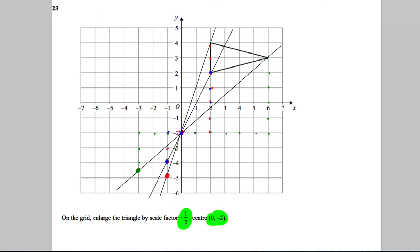There to there, that's there, and finally there to that. And that then would be the enlargement by scale factor negative half, center zero, negative two.